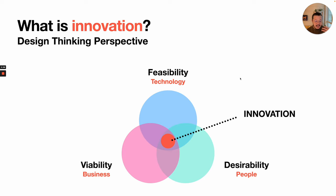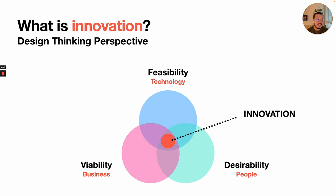Taking a design thinking perspective on innovation, most of you have seen this from our other lectures — innovation lies at the center of feasibility, viability, and desirability. Something that creates value for people — that's desirability — that is viable from a business and even ethical sense, and that is feasible from a technology standpoint. Feasibility is can we do it? Viability is should we do it? And desirability is would people want it?